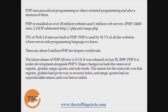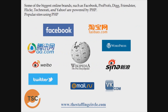PHP 6 is under development alongside PHP 5. Major changes include the removal of register_globals and magic quotes. The reason for these removals was that register_globals had given way to security holes, and magic quotes had an unpredictable nature and was best avoided.